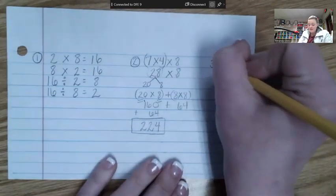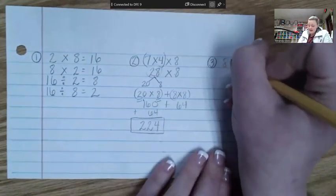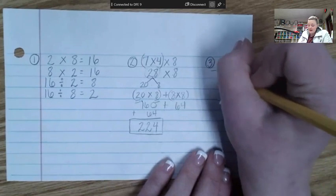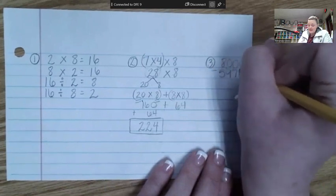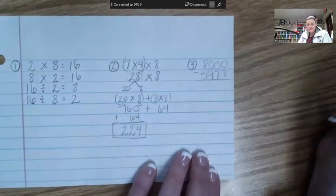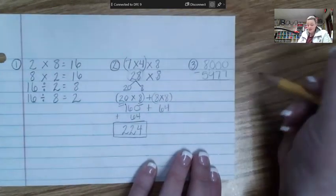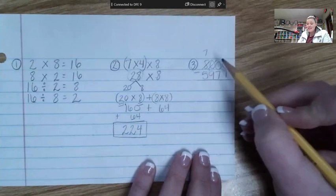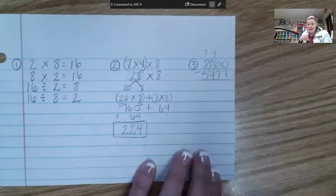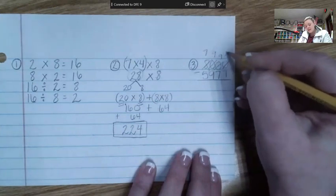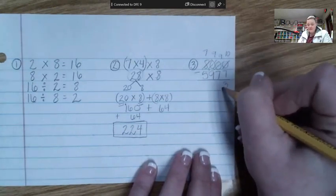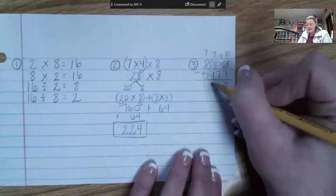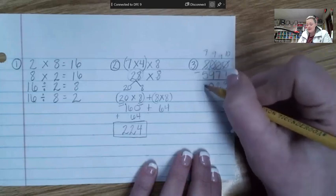Number 3, 8,000 minus 5,977. 0 cannot take away 7, so we're going to go all the way to the thousands. Change the 8 to a 7. The 0 becomes a 10, then a 9. This one becomes a 10, then a 9. Then this one becomes a 10. 10 minus 7 is 3. 9 minus 7 is 2. 9 minus 9 is 0. And 7 minus 5 is 2.